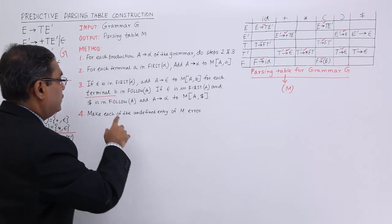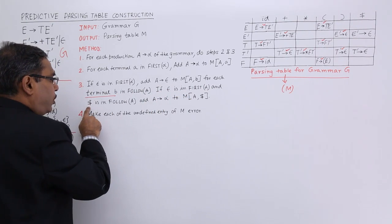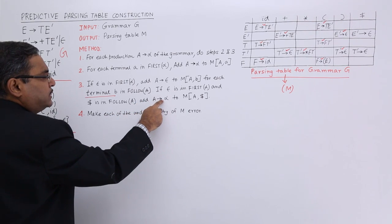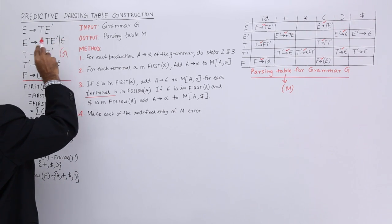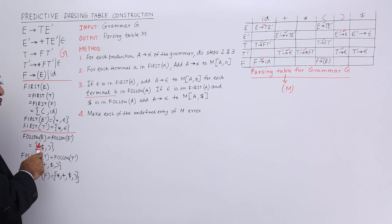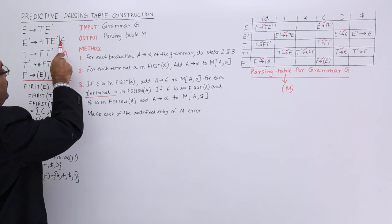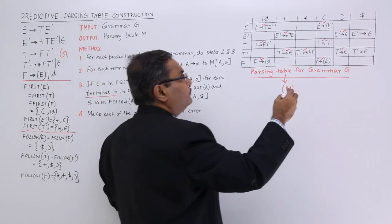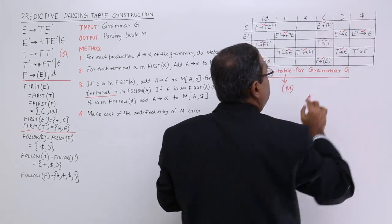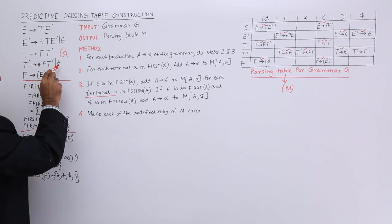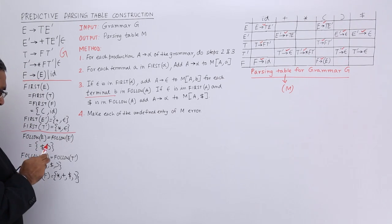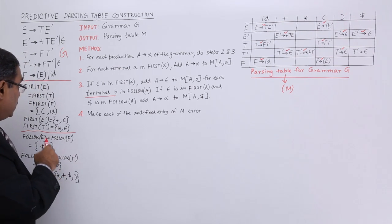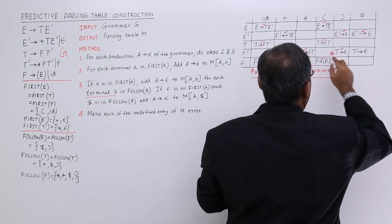Next, if epsilon is in first of alpha and dollar is in follow of A, then add A produces alpha to M[A, dollar]. First of alpha for E' produces epsilon contains epsilon, and follow of E' contains dollar. So E' produces epsilon will be placed at row E', dollar column. Similarly, T' produces epsilon — follow of T' contains plus, closing bracket, and dollar. T' produces epsilon goes at row T', columns plus, closing bracket, and dollar.